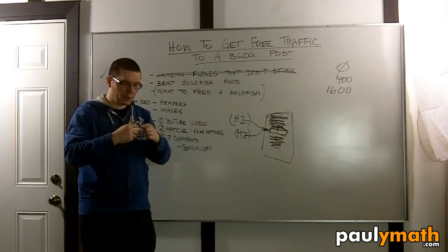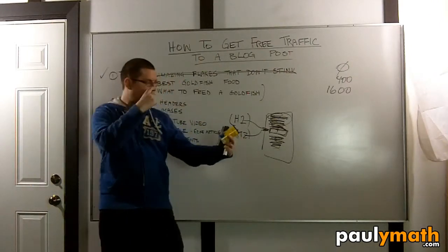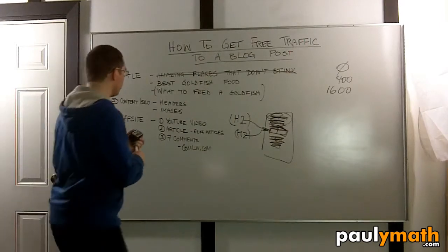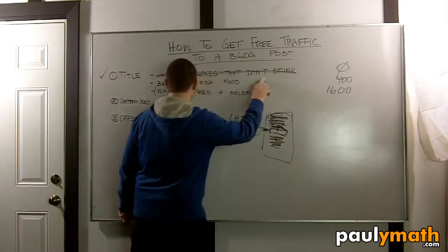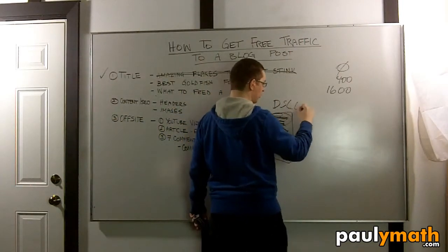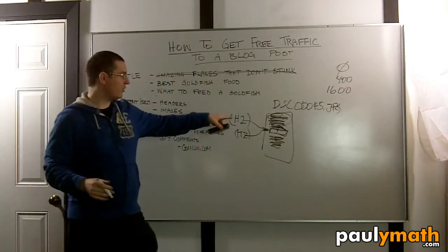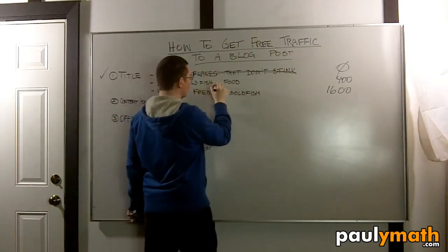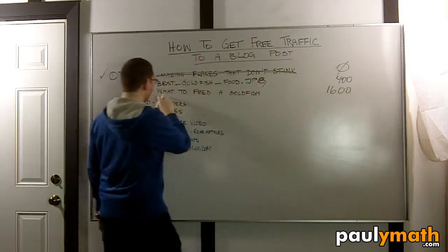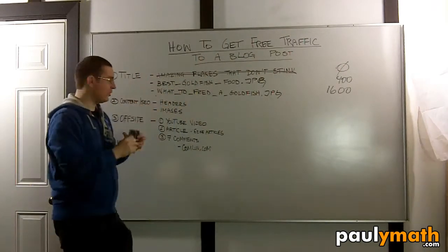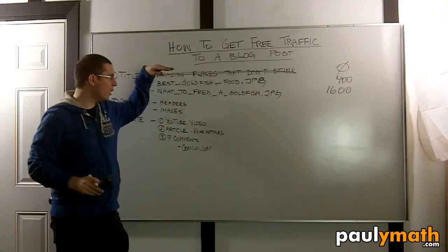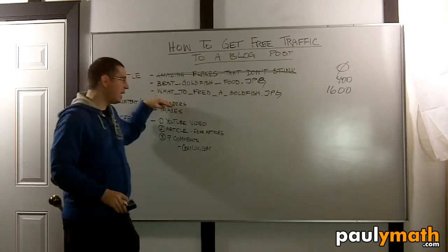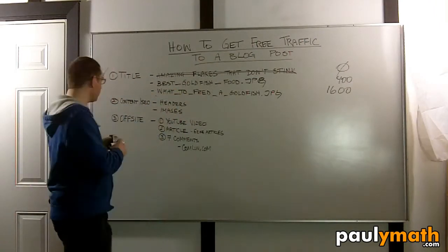Images: take a few pictures of the goldfish food — two or three pictures, different angles — and throw them into the blog post. When images come off your digital camera, they're named something like 'dsc00045.jpg.' Rename them. Name them based on your keywords — something like 'best_goldfish_food.jpg' or 'what_to_feed_a_goldfish.jpg.' When Google looks through your content and sees the title, content, headers, and images are all based on the keyword, that's all good check marks from Google.